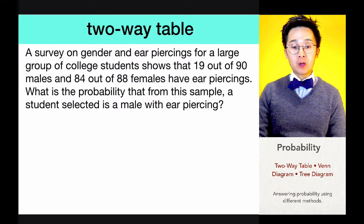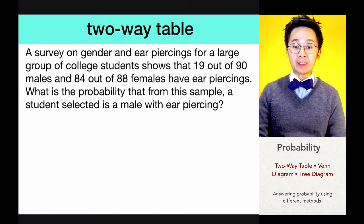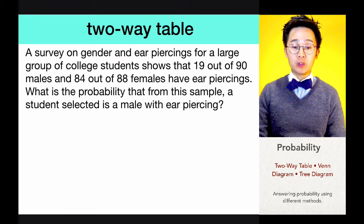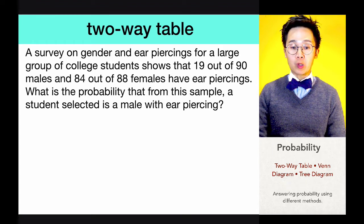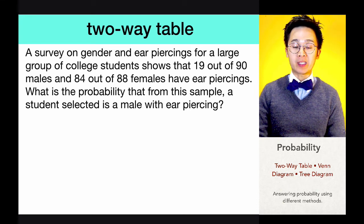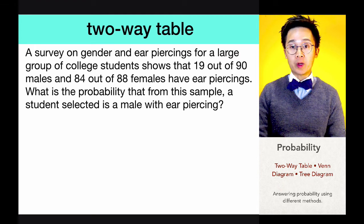In this probability question, we have a survey on gender and ear piercings from a large group of college students. It shows that 19 out of 90 males surveyed have ear piercings, and 84 out of 88 females have ear piercings. To answer this probability question better, we need to visualize the given data by organizing it in a two-way table.